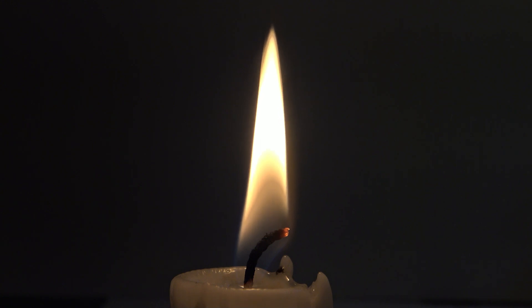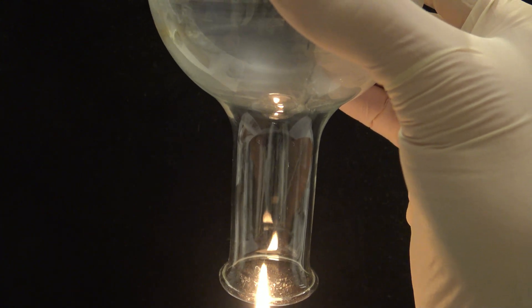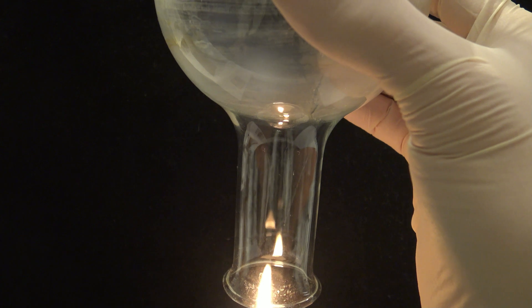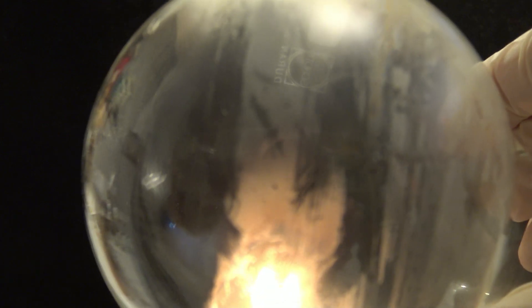To show one of the products from the combustion of a candle, a round bottom flask is held above the flame. On the inner surface, water condenses, which is a product of nearly every usual combustion.